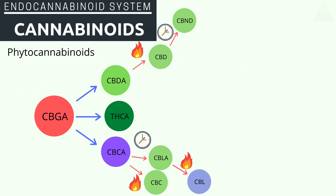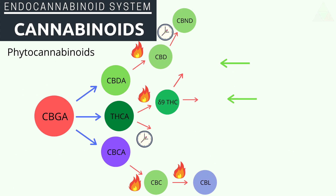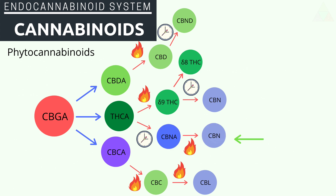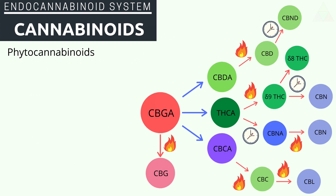CBCA can then take two main paths, creating either CBLA through oxidation or CBC through decarbing. CBLA can then be decarbed down to CBL. THCA when decarbed will create delta-9 THC. Delta-9 THC with oxidation can turn into CBN or delta-8 THC. When THCA is oxidized it will create CBNA, which through decarbing will create CBN. Also, CBGA through decarbing can become CBG.